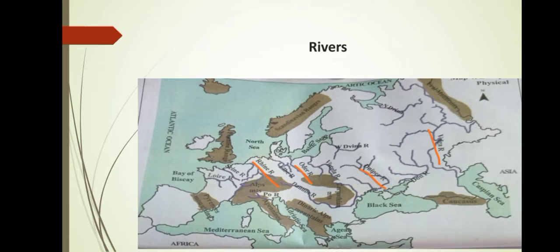You can identify many rivers on the map. Some of the rivers of Europe are Rhine, Volga, Oder, Danube, etc. You can identify all the rivers of Europe in your textbook on page number 46.